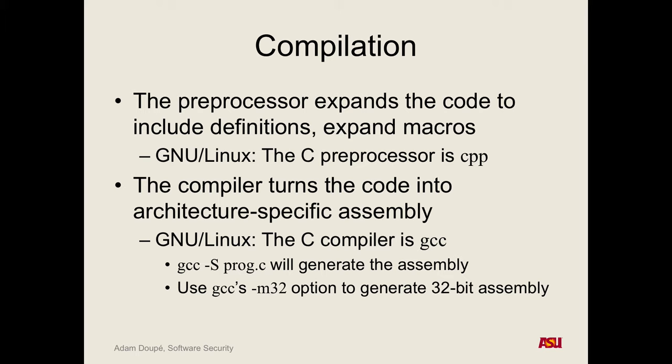The other important thing for this class: the -m32 flag is going to be critical because we are going to be exclusively focusing on x86. We're going to ignore 64-bit and AMV64. But if you're on a 64-bit system, you can still compile a 32-bit application using this flag.